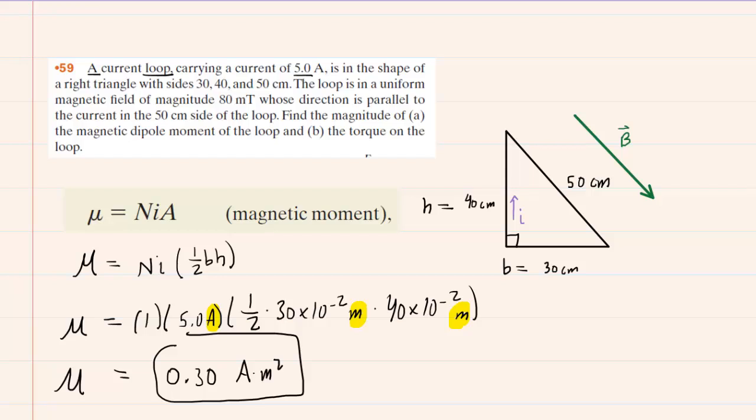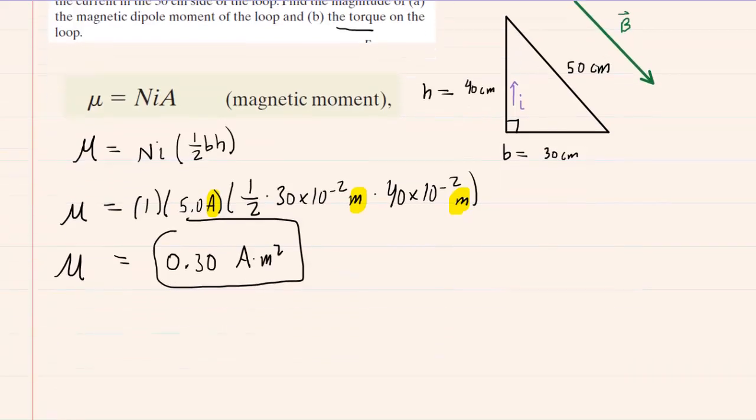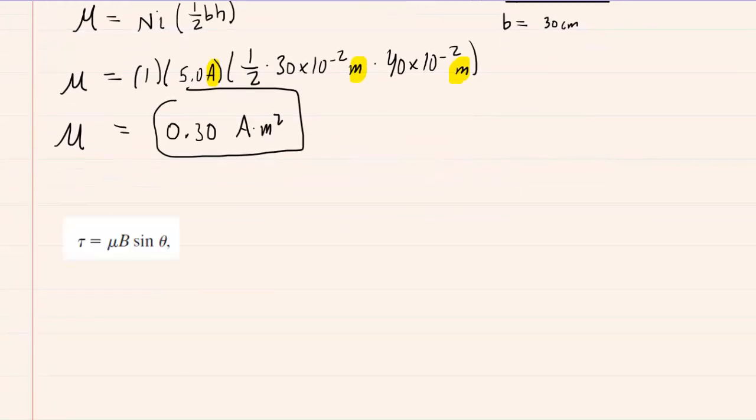We'll move on to part B, which asks us to determine the torque that is acting on the loop. In order to determine the torque acting on the loop, we shall be using this equation right here. This tells us that the torque on this current carrying loop placed in a magnetic field is equal to the magnetic moment, which we've just determined, multiplied by the magnitude of the magnetic field, which was given in the question, and then times the sine of the angle. Now it's important to note that the angle will be between the direction of the magnetic moment and the direction of the magnetic field.